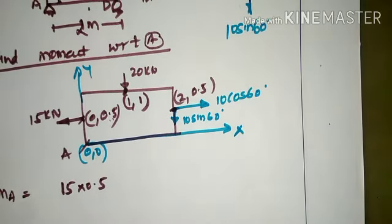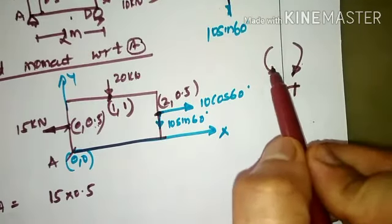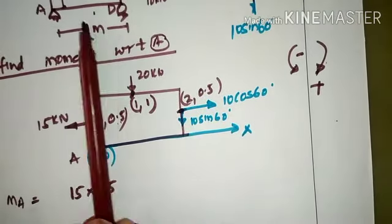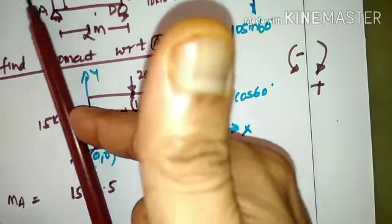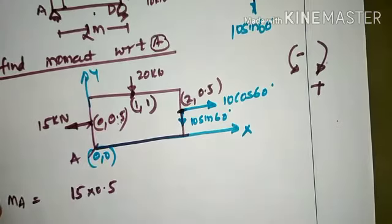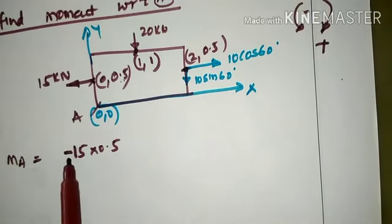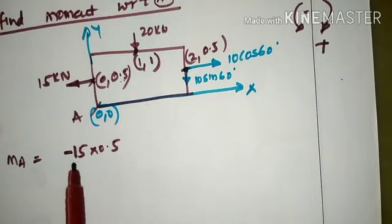We must also determine the direction of rotation and apply a sign convention. Clockwise rotation is positive and anticlockwise rotation is negative. With respect to point A at the bottom fiber, the 15 kN force acting leftward will cause anticlockwise rotation, so it is −15 × 0.5.